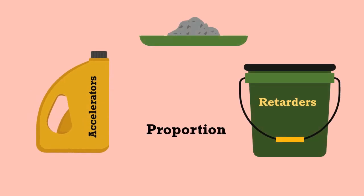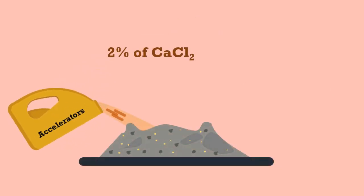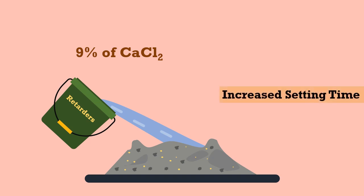Some substances may act as accelerators or as retarders according to the proportion added. For example, 2% of CaCl₂ when added by weight of cement acts as an accelerator, but on increasing the proportion it acts as a retarder and leads to increased setting time.